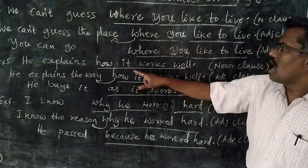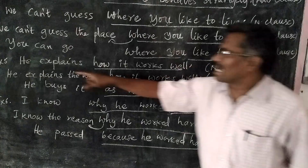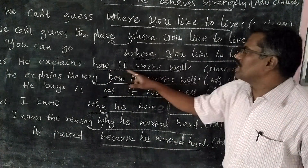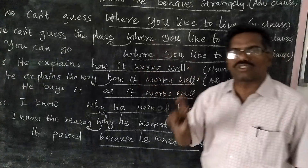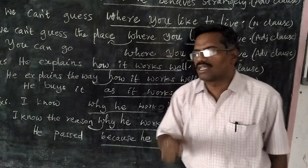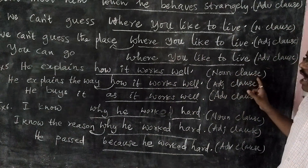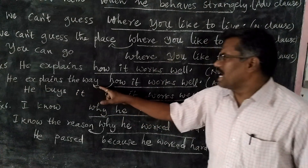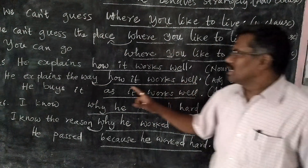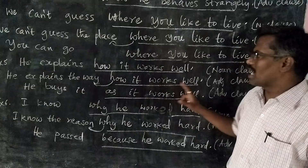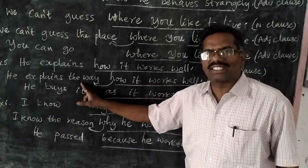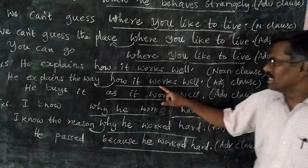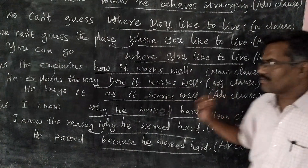Next: 'He explains how it works well.' He explains what? 'How it works' is the answer to 'what,' so it is a noun clause. Second: 'He explains the way how it works well.' Here, 'how it works well' describes its antecedent 'the way.' So it is called adjective clause.